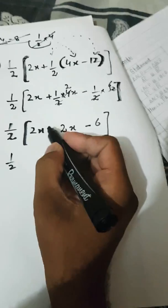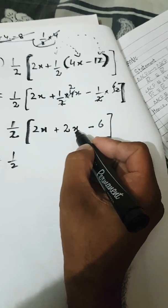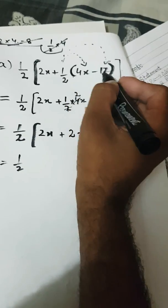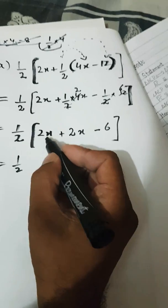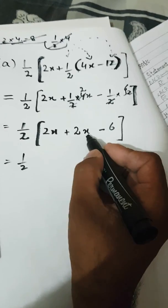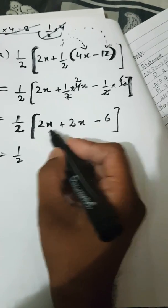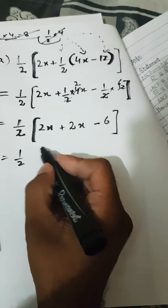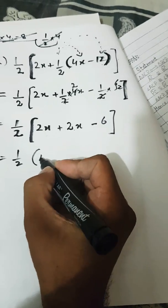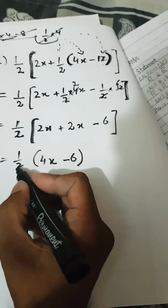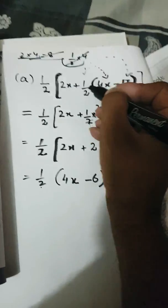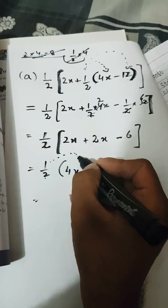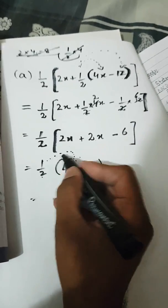Now you can see there is 2x and x — wait, we have 2x and 2x here, so we are able to perform the addition process. 2x plus 2x gives 4x. So the expression inside the bigger bracket becomes 4x minus 6. Now 1 over 2 will be multiplied inside this bracket.